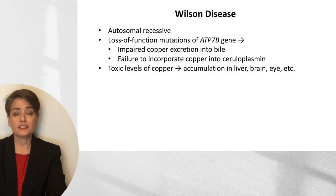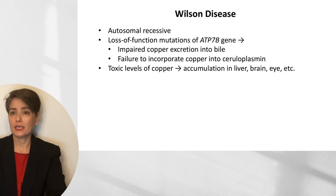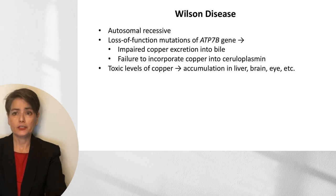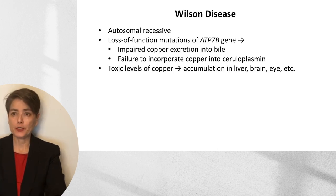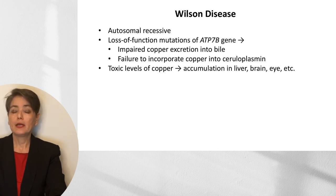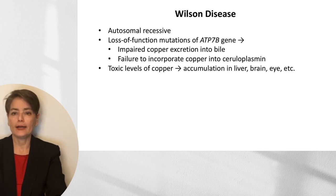Wilson disease is another disease of excess metal accumulation, also autosomal recessive. It is due to loss of function mutations of the ATP7B gene, leading to two effects: impaired copper excretion into bile and failure to incorporate copper into ceruloplasmin. Toxic levels of copper build up and accumulate in multiple organs including liver, brain, and eye.